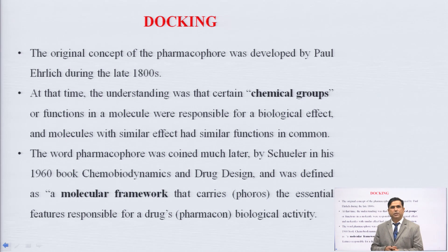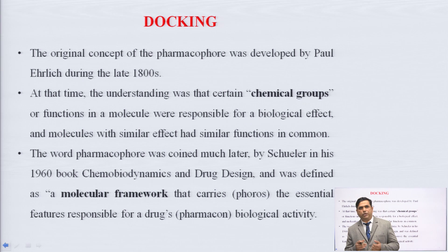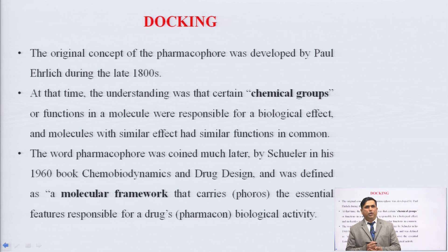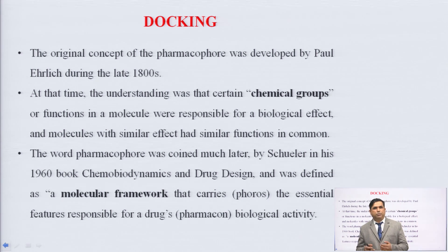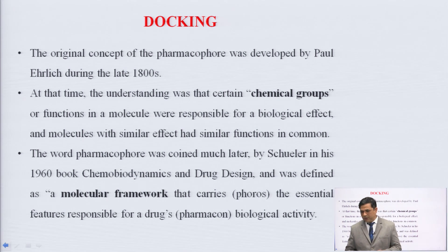The concept of the pharmacophore was first developed by Paul Ehrlich. The pharmacophore describes certain chemical groups or functions in a molecule that are responsible for biological effects, and molecules with the same effects had similar functions in common. The word pharmacophore was coined later by Schulder in the 1960s in his chemo-biodynamics and drug design, and was defined as a molecular framework that carries the essential pharmacophoric features required for biological activity.